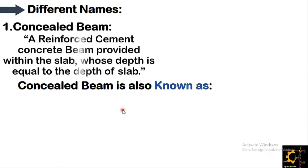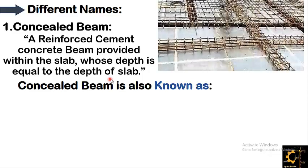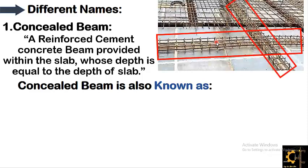A concealed beam is a reinforced cement concrete beam provided within the slab. What makes it different from an ordinary beam is that it is provided within the slab and its depth is equal to the depth of the slab, which means it is concealed or hidden inside the slab. One cannot see or have any idea where the concealed beam lies.